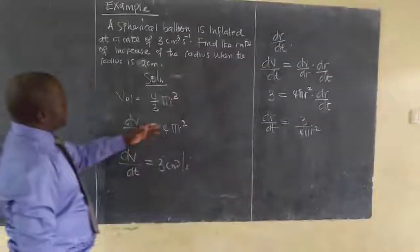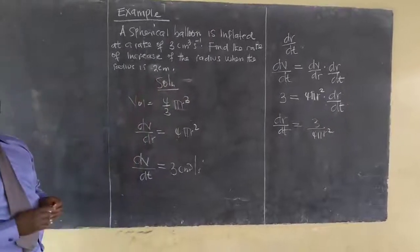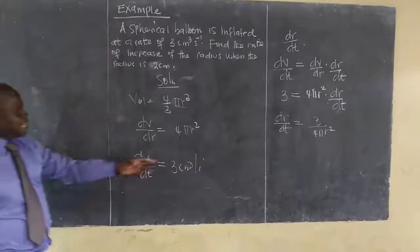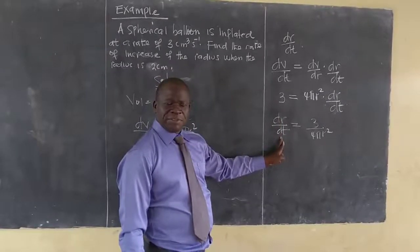Now, the question now says find the rate of increase of the radius when the radius is 2 centimeters. Now, it's another rate of change of radius which is dr/dt. Are you following?